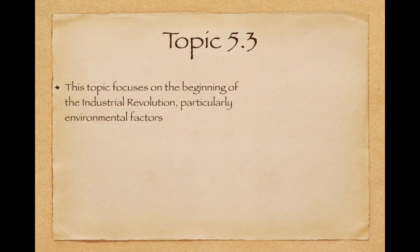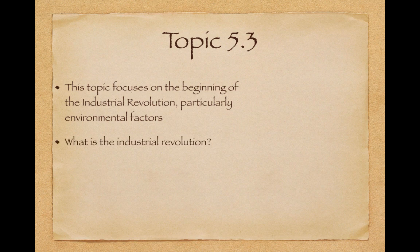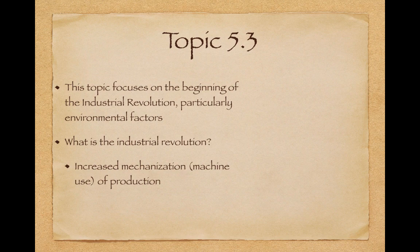Topic 5.3 focuses on the beginning of the Industrial Revolution, particularly environmental factors that allowed for the Industrial Revolution to begin in Great Britain. So what was the Industrial Revolution? Well, machine use of production. And this began in Great Britain. Very important to know both of those — what it is and where it began.